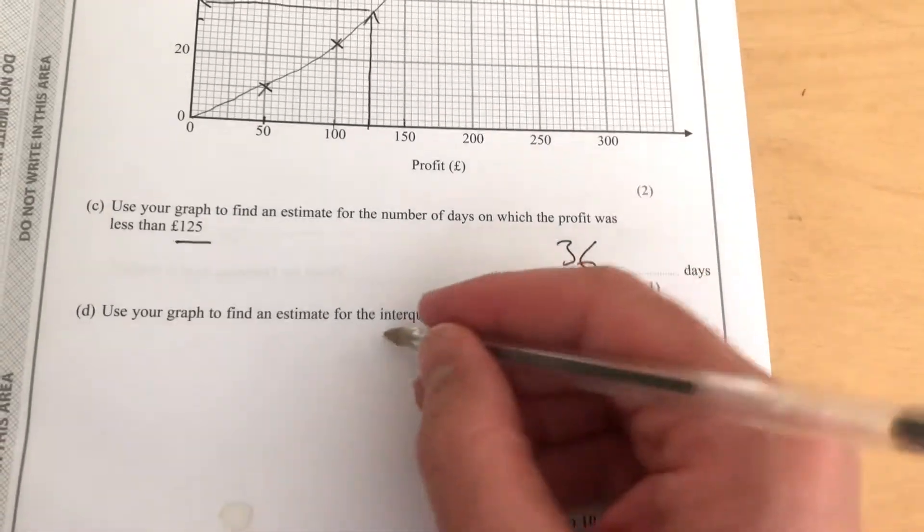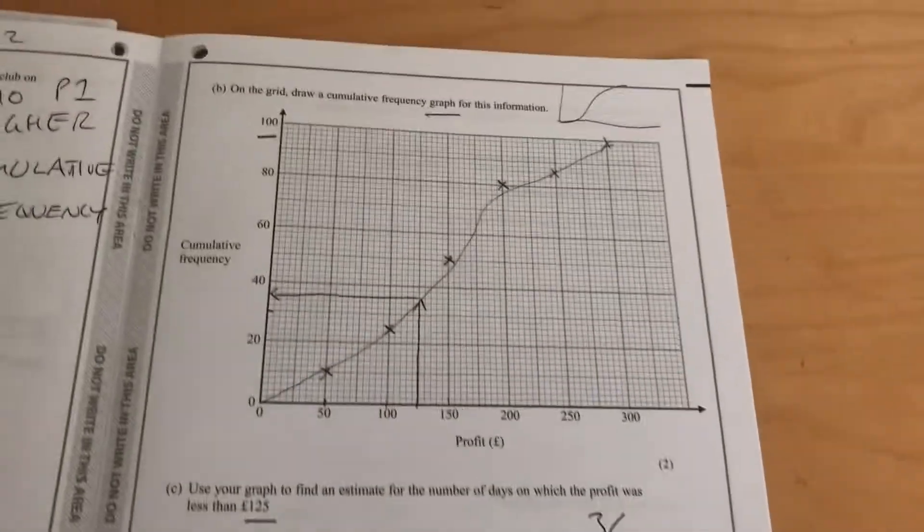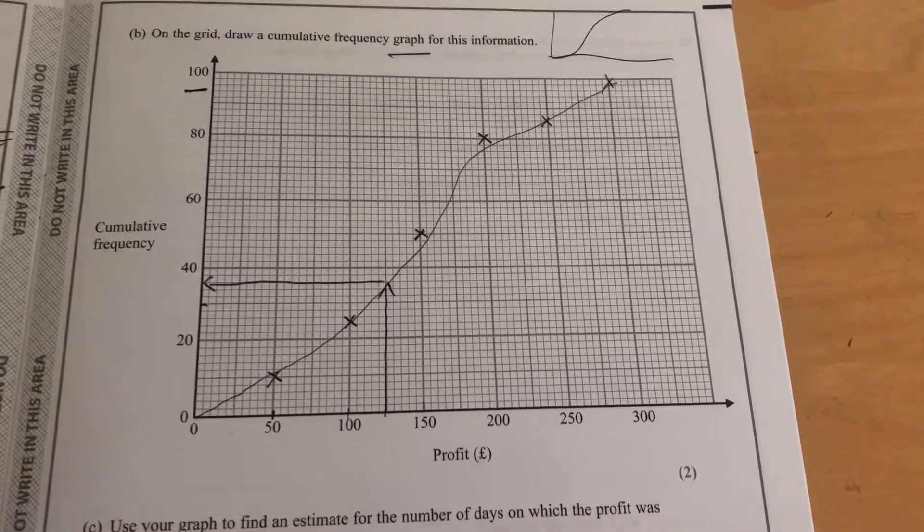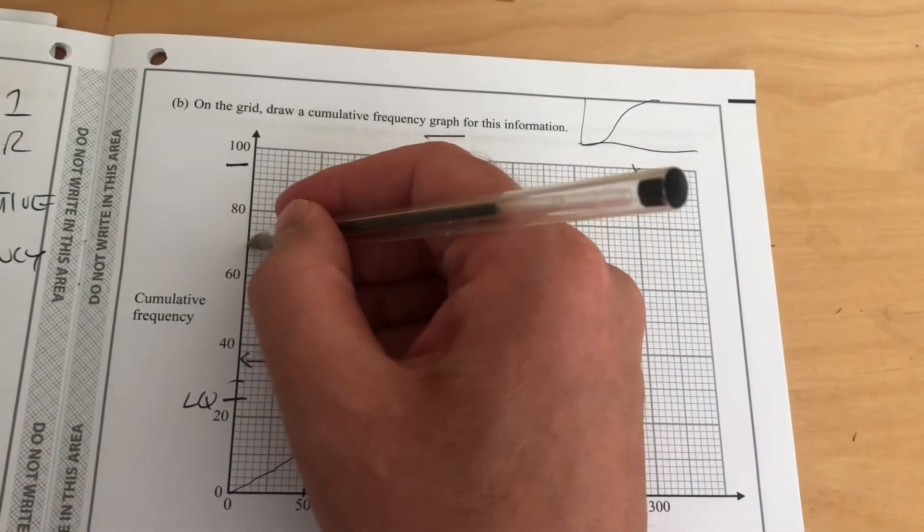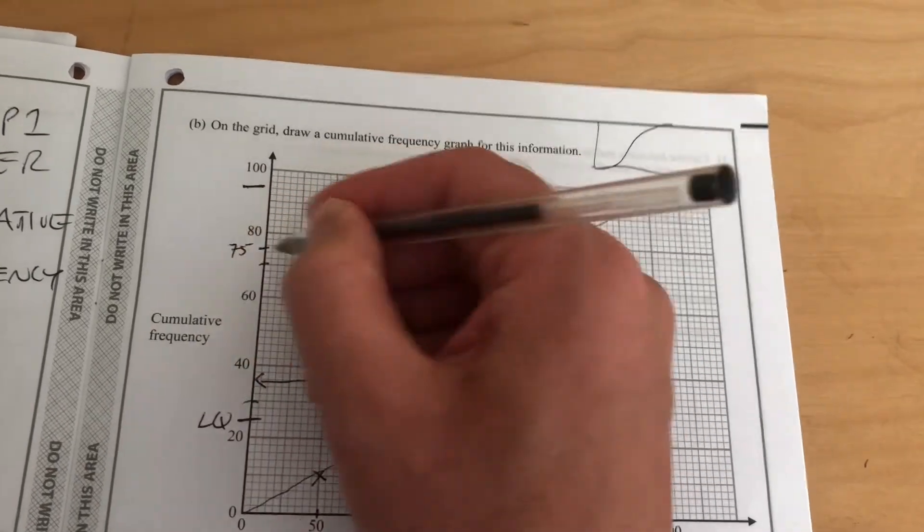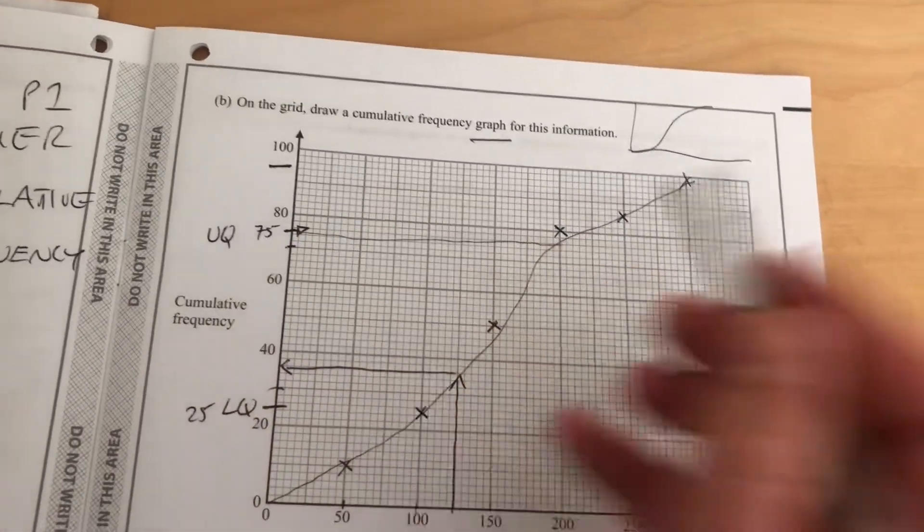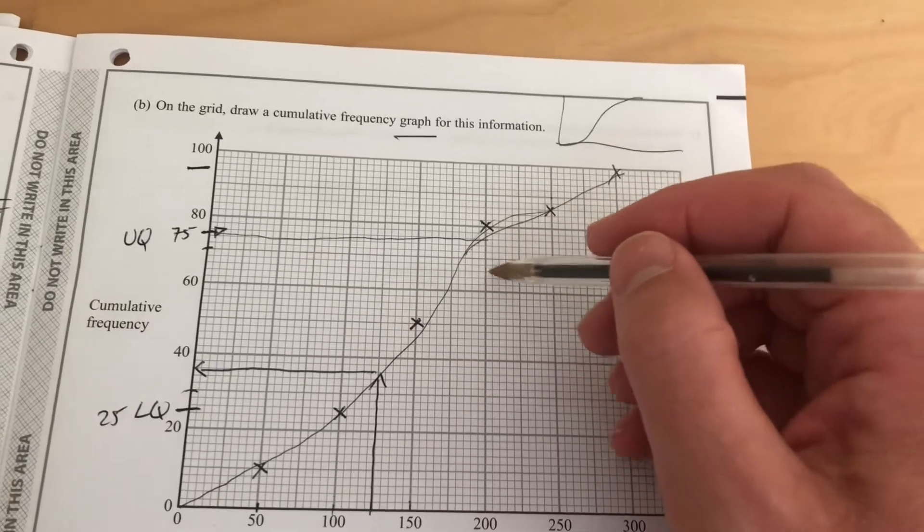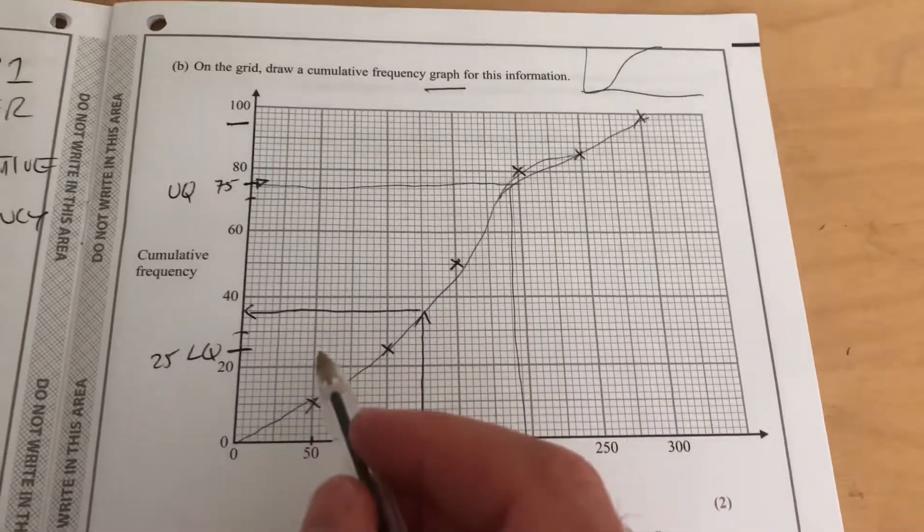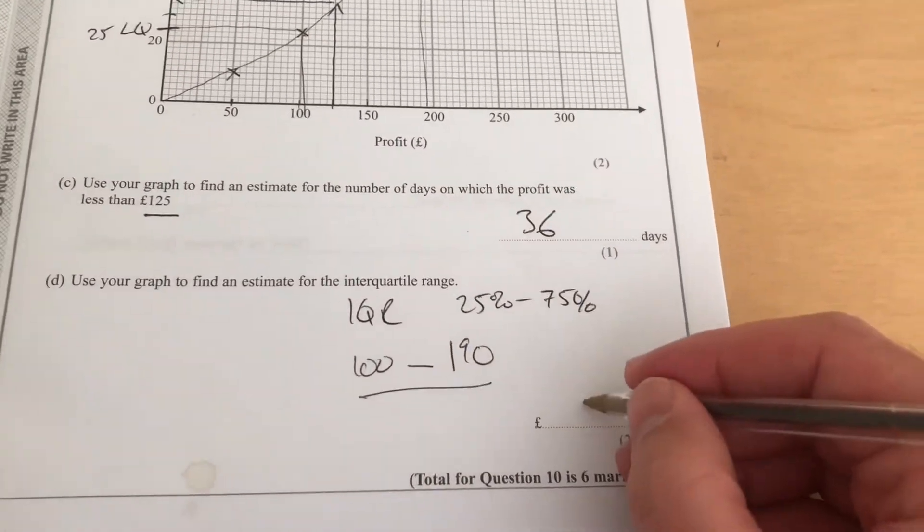And then it says, use your graph to find an estimate for the interquartile range. Now the interquartile range is from 25% to 75%. Luckily, we've got 100 days, so we can read that off quite easily. So we go to wherever, that's 30, so 25 days is there. There's your lower quartile. There's 70, so 75 days would be there. That's your upper quartile. Lower quartile at 25, and we read across, probably would have hit somewhere around say £90. And then here, reading across there, £200. So the interquartile range would be £90.